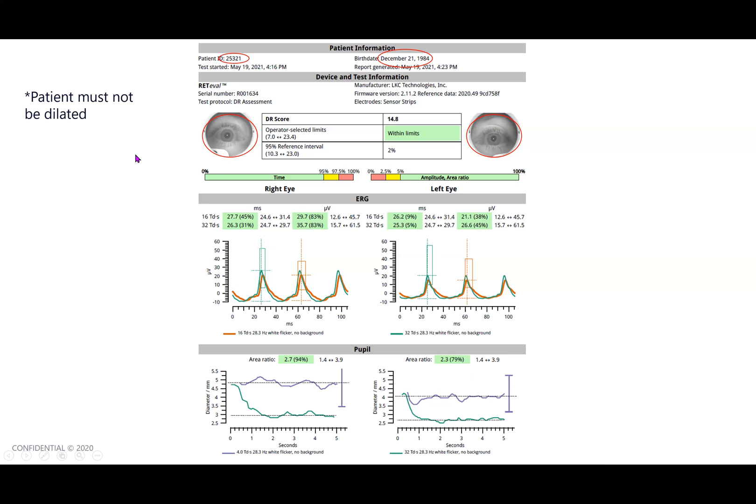This report can be as easy as you want it to be, or you can dig into the details. If you're interested in just a quick number telling you, is this patient at risk or not at risk, you can look at the DR score. In this particular case, 14.8, that's well within the limits of the Briegel study of 7 to 23.4. If you want to compare it to the normative database, you can see in the second percentile, so way down at the bottom of the DR score range. And remember, the lower the DR score, the better.